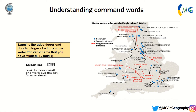The next command word is 'examine,' which usually requires a much longer answer — we're looking at a six-mark answer. For example: examine the advantages and disadvantages of a large-scale water transfer scheme that you have studied. You have to look in close detail, give facts, bring data and evidence. For a case study like Kielder Reservoir, tell me the benefits and negatives in detail. You need at least two advantages and at least two disadvantages explained in more depth for a six-mark answer.